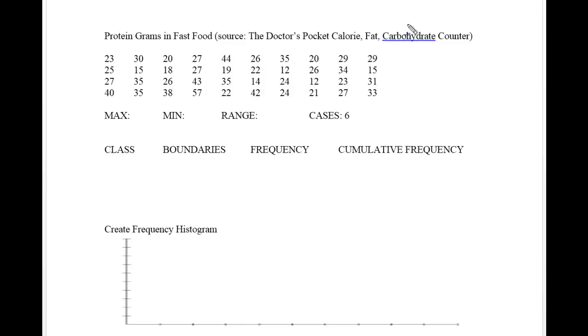Pause the video and fill out as much as you can based on the previous video. You can use this to check your answer. The maximum in this graph is 57, the highest amount of grams of protein in fast food taken from the Doctor's Pocket Calorie, Fat, and Carbohydrate Counter manual. The minimum amount of protein in one of these fast food items is 12 grams.